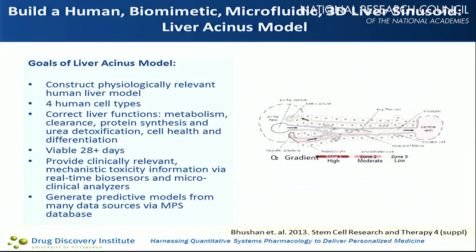Our goal was to build a human biomimetic microfluidic 3D liver sinusoid — a liver sinus model — where we have a gradient of oxygen and pH from a high oxygenation side of the liver sinus to a low, representing zones one, two, and three. We have the organizational structure of hepatocytes layered with endothelial cells, stellate cells, and Kupffer cells — four cell types total. We wanted to maintain normal liver functions including metabolism, clearance, protein synthesis, urea detoxification, and overall cell health, with a first-phase milestone of functionality over at least 28 days.